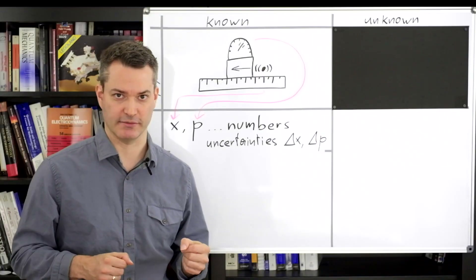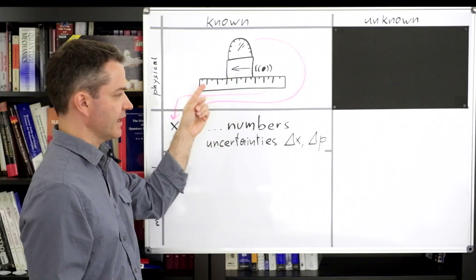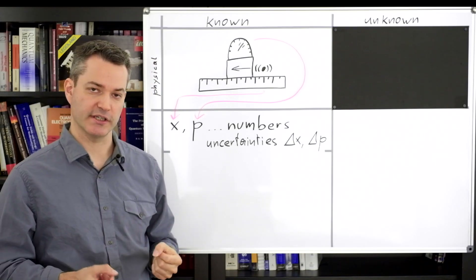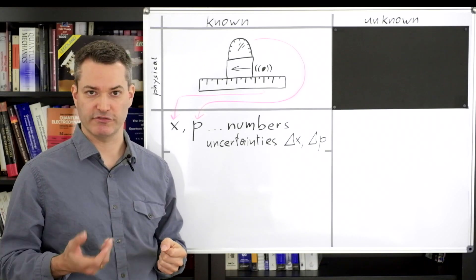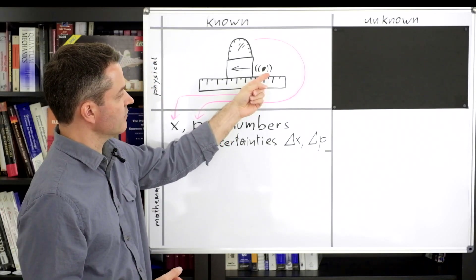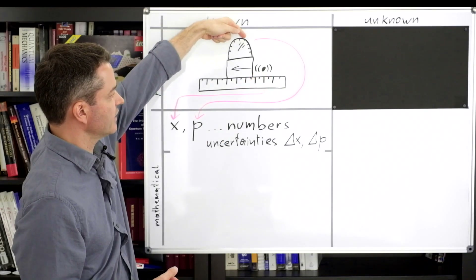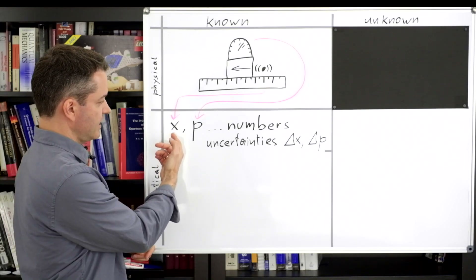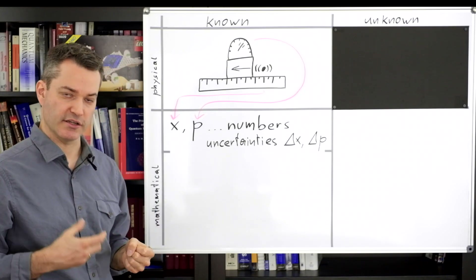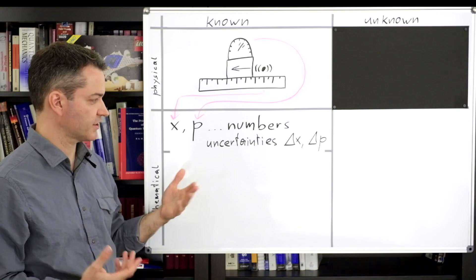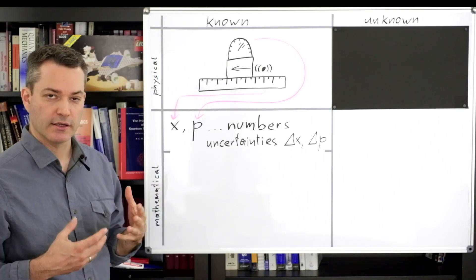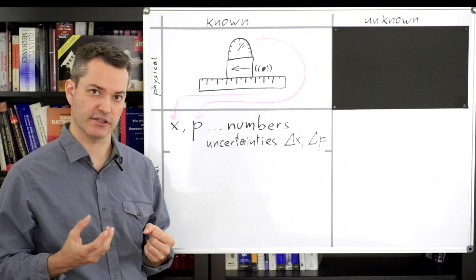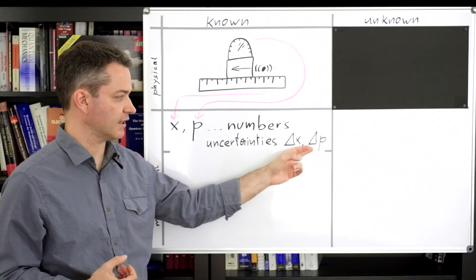Let's make this more concrete by looking at a simple example. We observe a particle by measuring its position x using a scale and detecting its momentum p along the same axis. Any such experimental observation will necessarily be somewhat unsharp because no practical measurement can achieve infinite precision. Mathematically, our knowledge will be represented by real numbers x and p. We must also quantify the uncertainty of our knowledge about x and p in the form of the measurement errors delta x and delta p. This does not imply that our measurements are incorrect — it means that we cannot distinguish physical situations that differ by less than delta x in position and less than delta p in momentum.